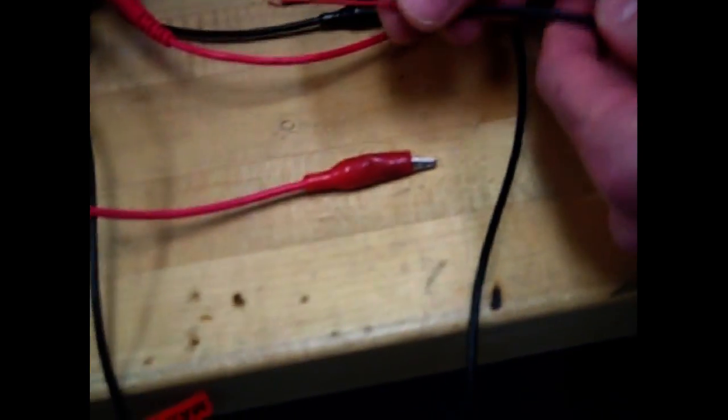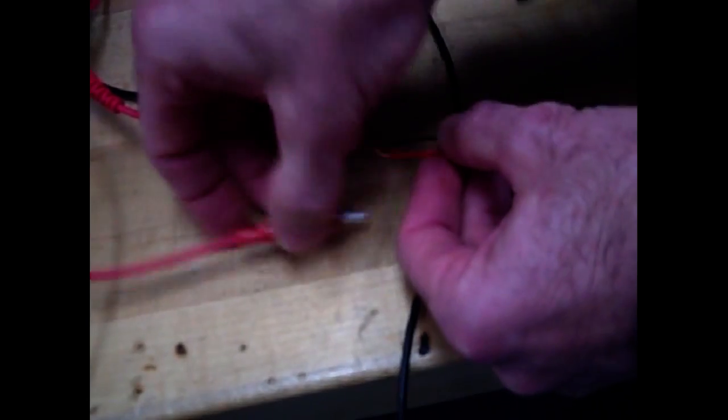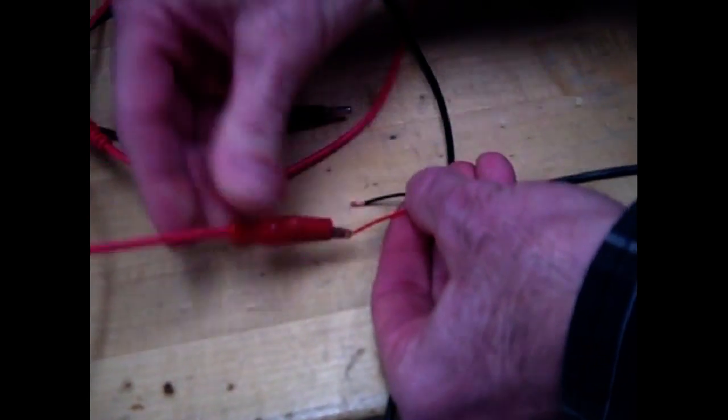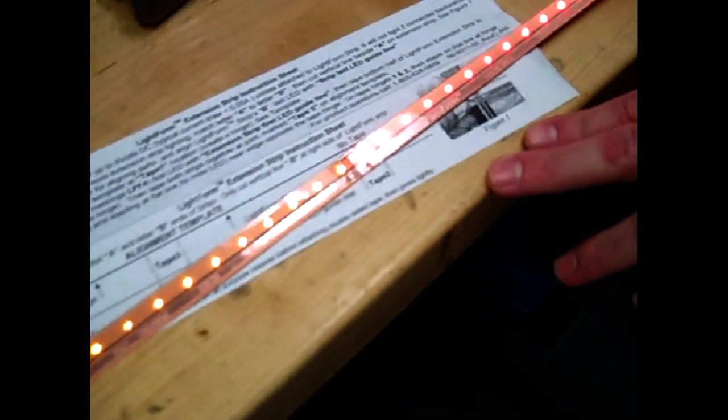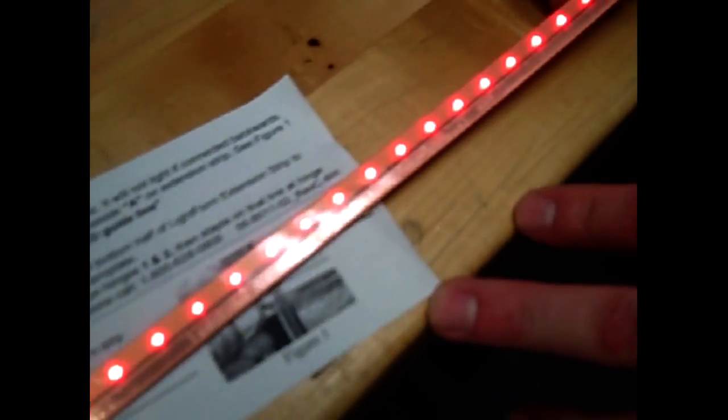And then we can verify that we made proper stapler work by applying power to the two strips. Again, the power supply is at 12 volts. And as you can see, the amber power strip is connected to the red extension strip.